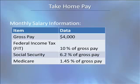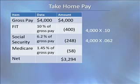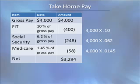Here is monthly salary information. We need to compute the take-home pay. Gross pay is $4,000. Federal income tax is 10% of gross pay. Social Security is 6.2% of gross pay. Medicare is 1.45% of gross pay. For each deduction, we multiply the percentage by the gross pay of $4,000. You can either use the percentage key on your calculator or convert the percentage into a decimal. Notice the decimal for Social Security is 0.062, and the decimal for Medicare is 0.0145.